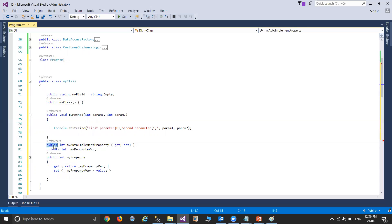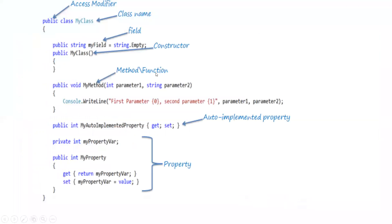This is about my class structure. The class name, the access specifier, the field with its return type and access specifier, the constructor with its access specifier, the method, and the auto-implemented properties — these were introduced in C# 3.0 where they automatically implement the getters and setters. If you look at the diagram shown in the slide, you can see all of this: access specifier, class name, field, constructor, method name, and the auto-implemented properties.